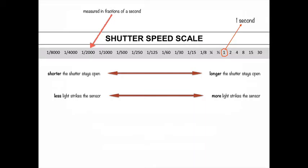The longer the shutter speed stays open, the more light comes into the camera and strikes the sensor. Whereas the shorter the shutter stays open, the less light strikes the sensor.